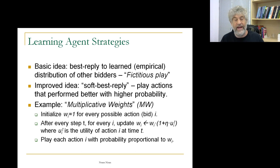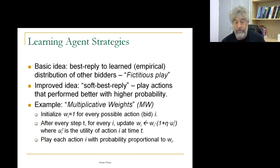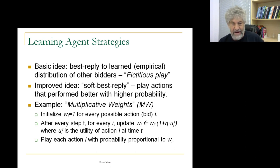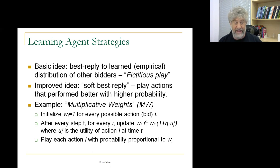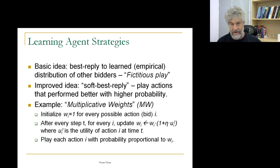What kinds of agents are we going to assume? The basic idea would be what's called fictitious play — each agent basically tries to learn according to the history. The simplest kind of learning: I look at the history of what the other agent did and I'm going to do a best reply to that. That would be the simplest kind of agent. Now, it's known that this simplistic strategy is not always very good, but some kind of soft version — a soft best reply — works very well. I look at the previous distribution and play with higher probability the strategies or bids that perform better relative to the history.